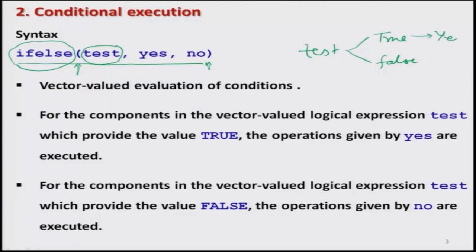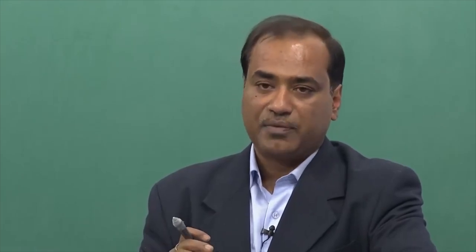The answer will be either yes when the statement is true, or no if the statement is false. In case the statement is true, the control comes to the 'yes' part, and whatever statement I have written there will be executed. If the condition is false, the control comes to the 'no' part, and whatever statement is written in place of 'no' is executed. So under the same format, this syntax gives us an opportunity to write a condition and execute the appropriate statement based on whether it is correct or not.